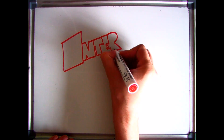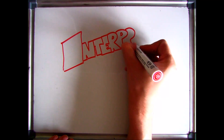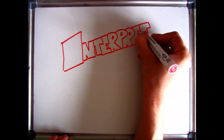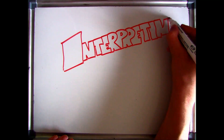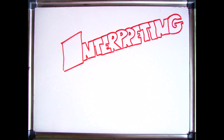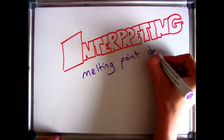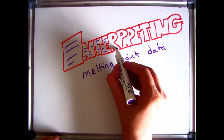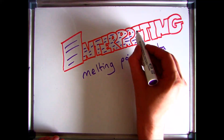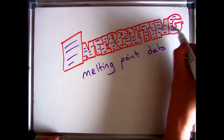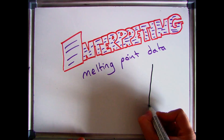This section of the video is going to let you analyse melting point data and use it to predict whether something is pure or impure. It's also going to help you to draw and interpret graphs based on the melting points given.